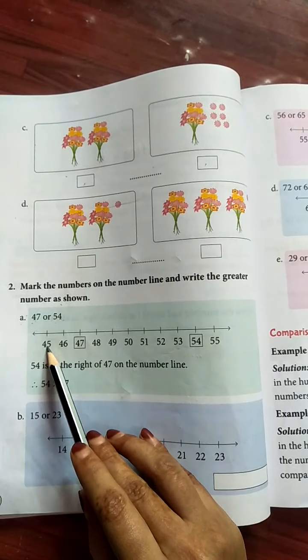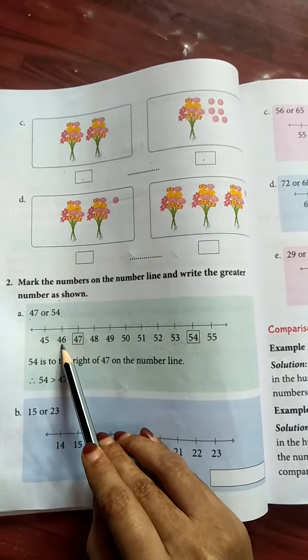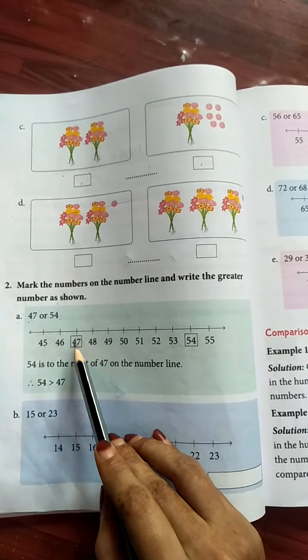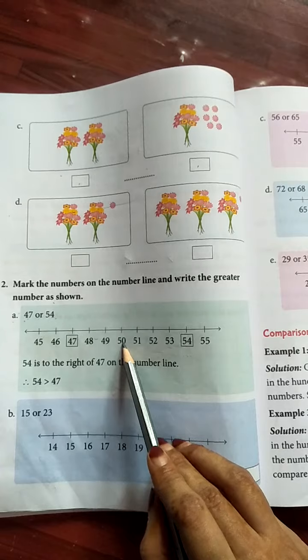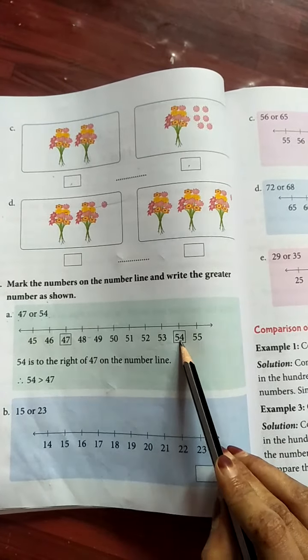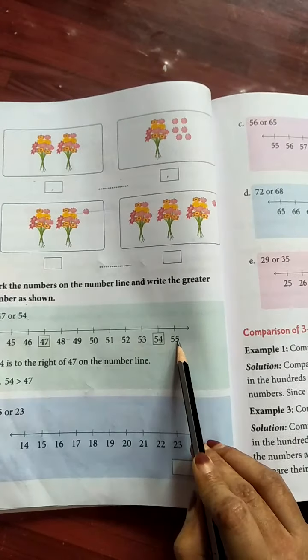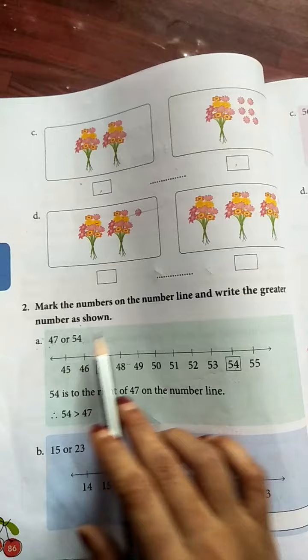Here first, write already written here. 45, 46, 47, 48, 49, 50, 51, 52, 53, 54 and 55. See this number line.